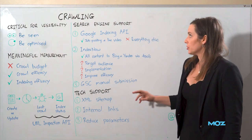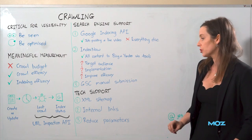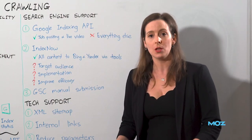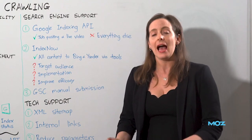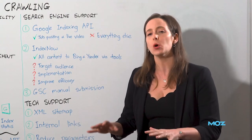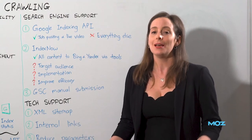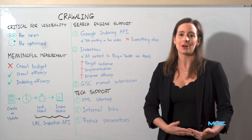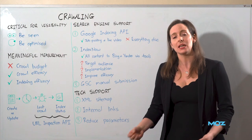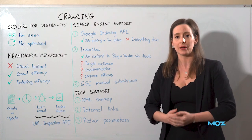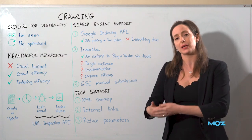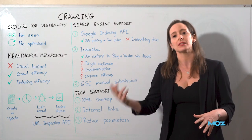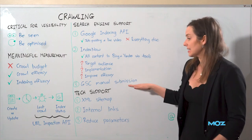The last area where search engines will actually support us with crawling is Google Search Console manual submission, and this is truly useful. It will trigger a crawl generally within around an hour, and that crawl does positively impact indexing in most cases. But the challenge is you're limited to 10 URLs within 24 hours. Don't disregard it just because of that — if you've got 10 highly valuable URLs and you're struggling to get them crawled, it's definitely worthwhile. You can also write a simple script to submit 10 URLs to Search Console every single day.